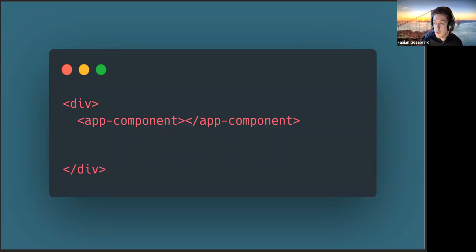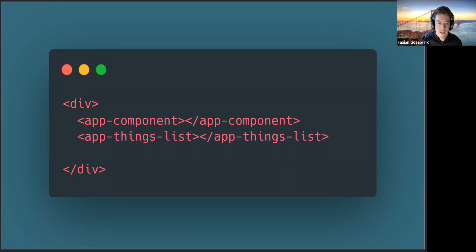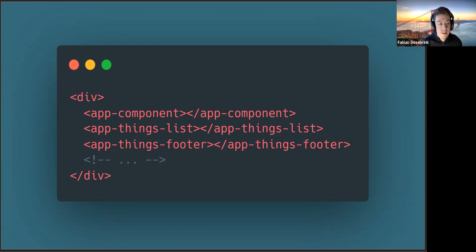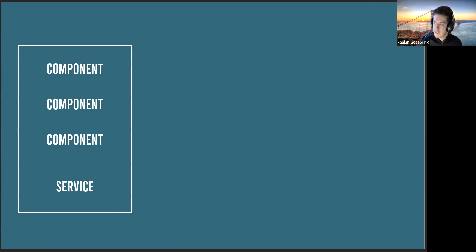You're adding more and more components to your application - a list component, a footer component. Your application grows and grows. All the stuff you add brings more code and you start thinking about how to divide it. So you take all those components and maybe a service and pack them into a module. This is one of the logical separation systems Angular brings us with Angular modules.